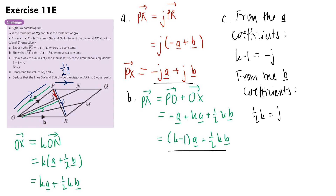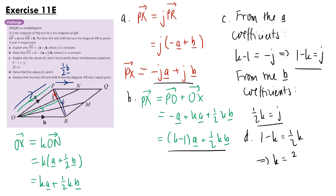For part d, we solve the simultaneous equations. Multiplying the first equation by minus 1 gives 1 minus k equals j. Setting equal to the second equation: 1 minus k equals one-half k, so k equals two-thirds. Since one-half k equals j, we get j equals one-third.